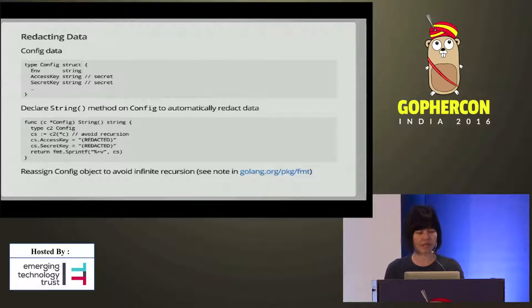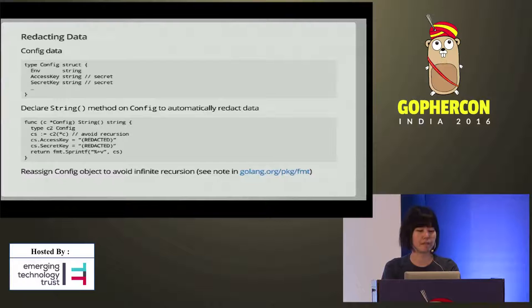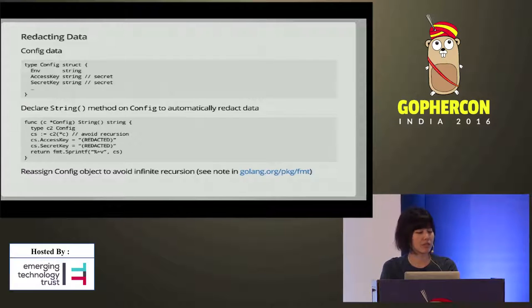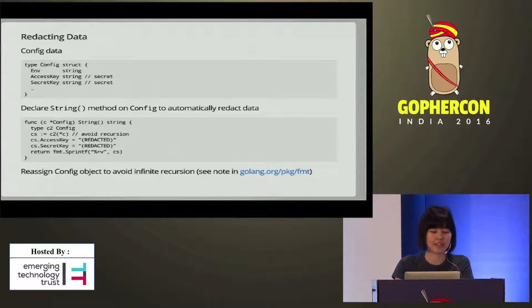For example, if you have a set of config data — you have the environment data, access key, and secret key in this config struct — and you want to redact the access and secret key, which are confidential, you don't want to show them in your server logs. You can declare a String() method on the config struct to automatically redact data. In the second block of code, that's how you define a String() method. In the second and third lines, we have reassigned the config object to avoid infinite recursion — there's a chance that infinite recursion might occur here.